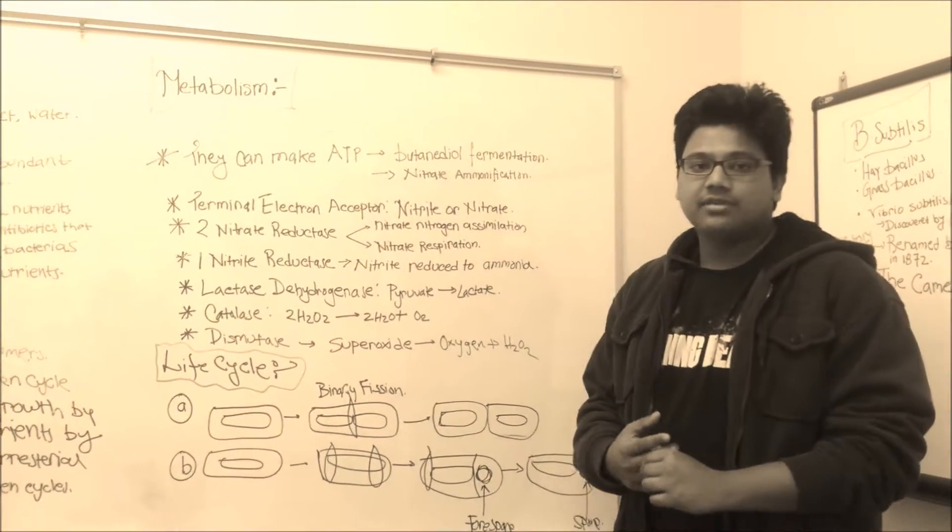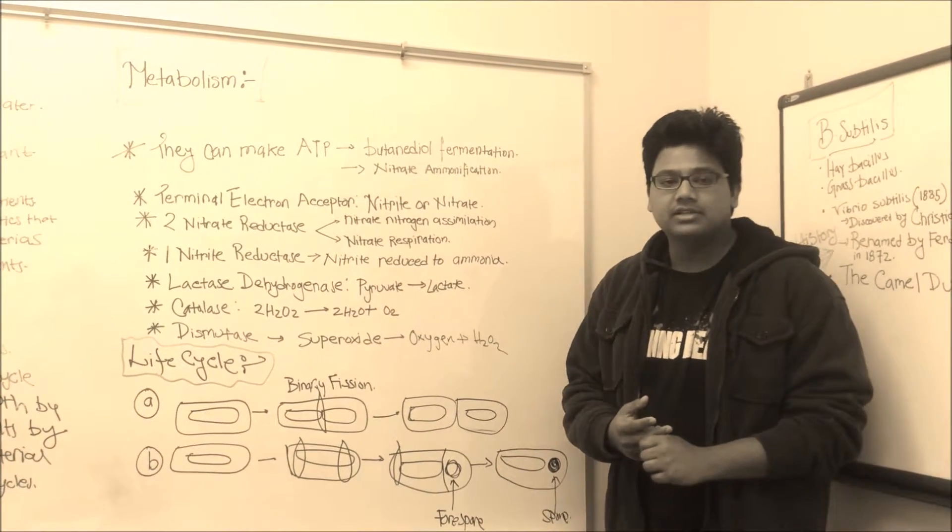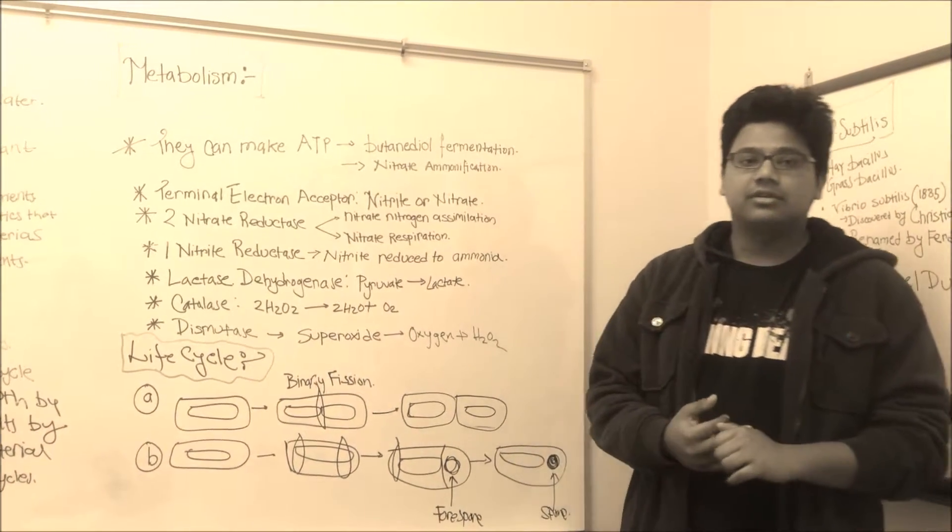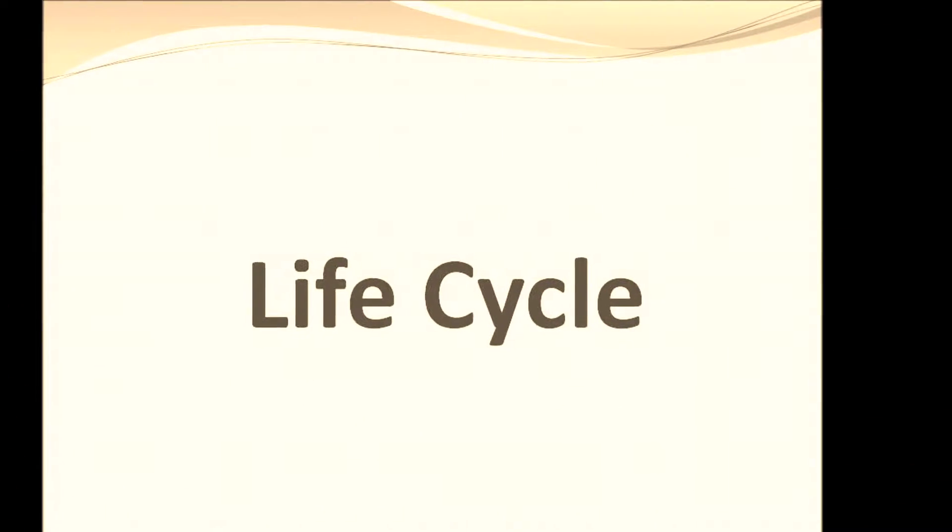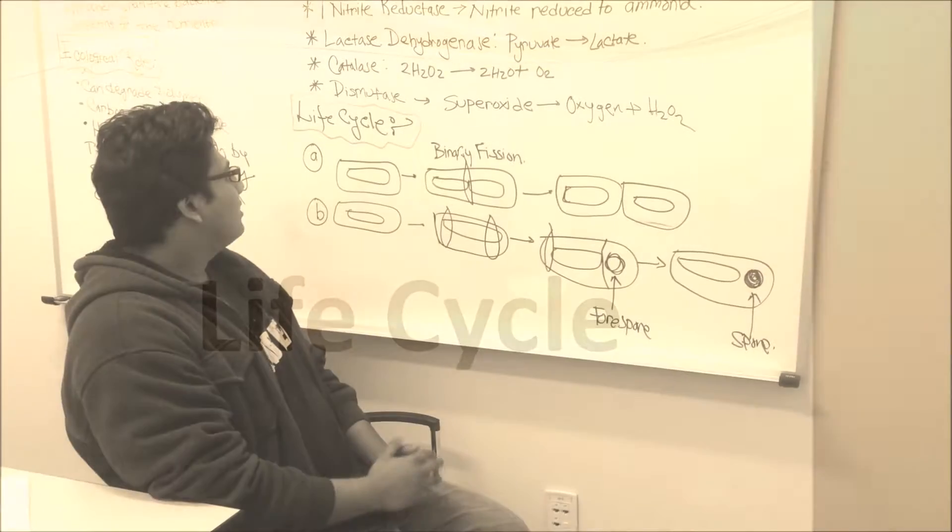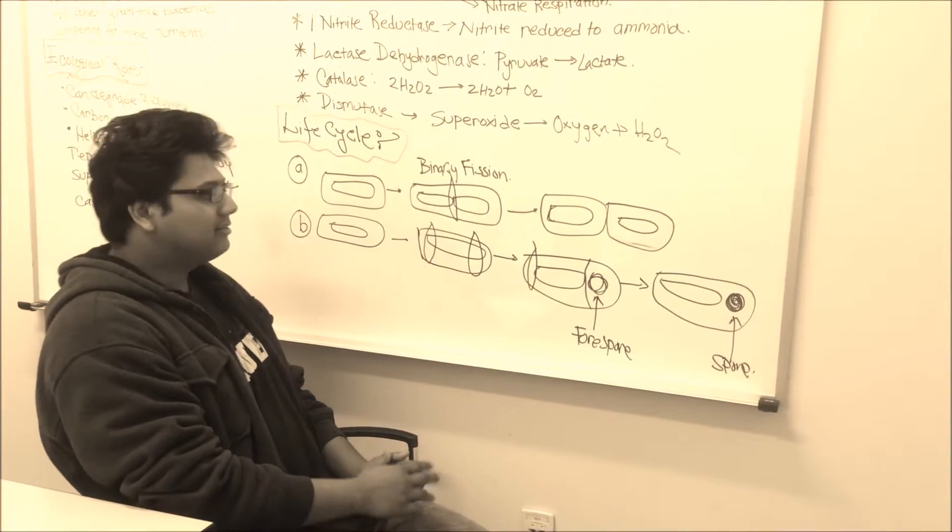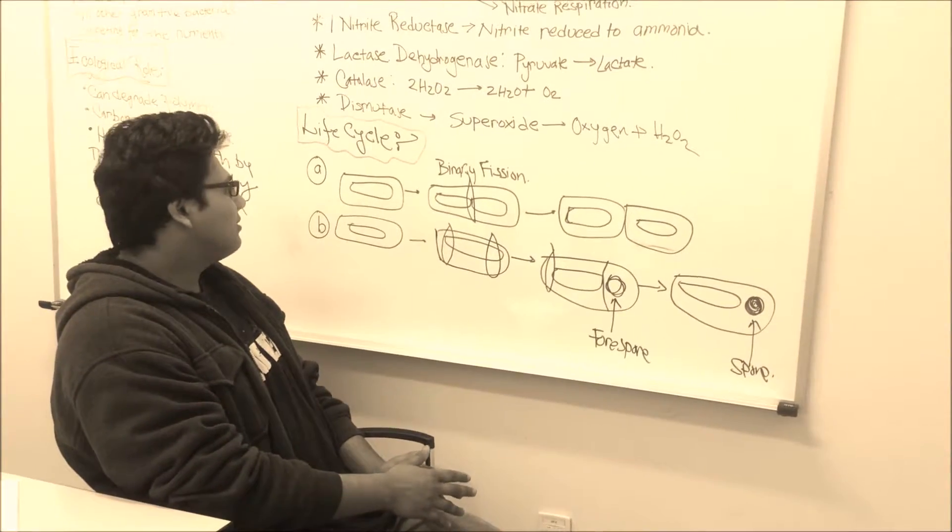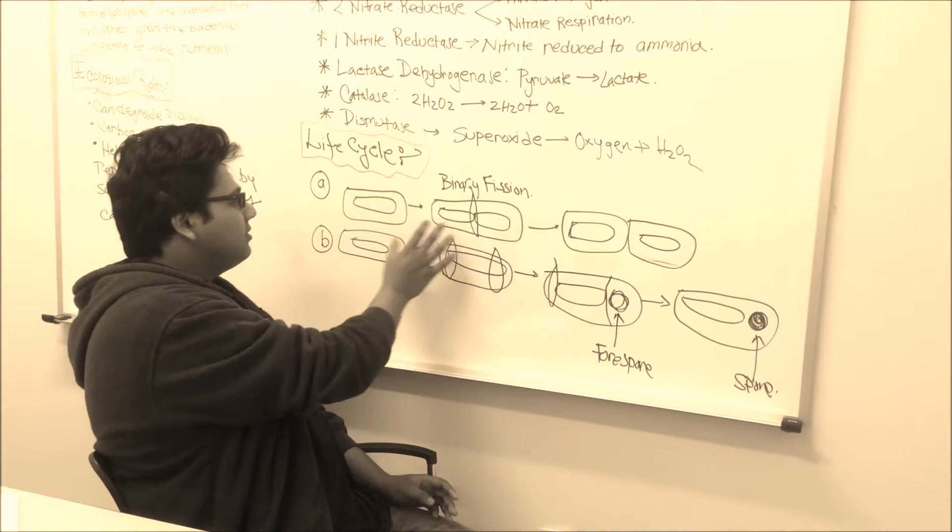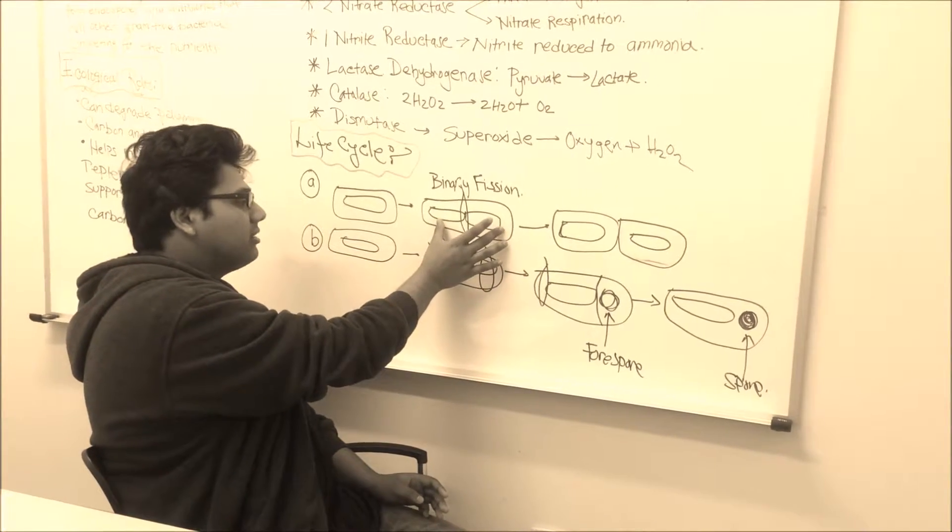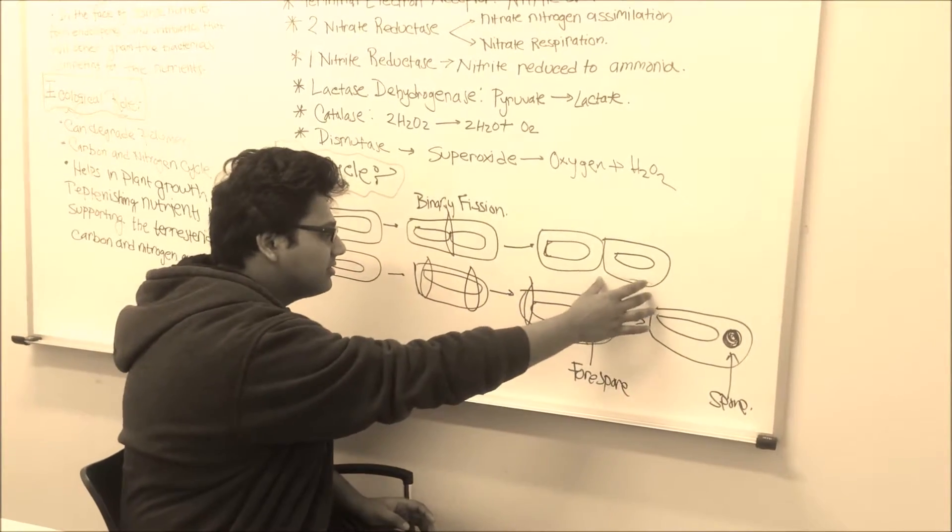We're going to talk about life cycle, how B subtilis leads its life. They can go two ways. One way they can do binary fission, where we have a single cell and elongated chromosome being divided exactly at the center to create two daughter cells.